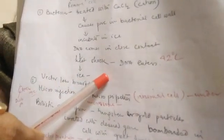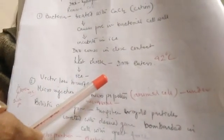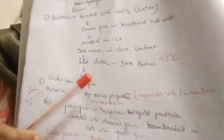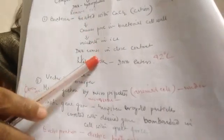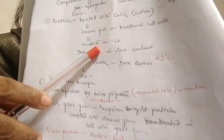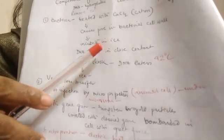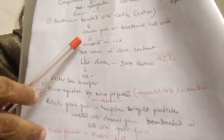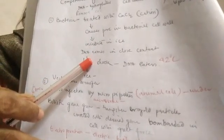So this is how the plasmid can enter the bacterial cell. Now there are other methods. The procedure which we are thinking about is mainly where the vector has been used to insert the target DNA into the cell. But there are certain cases where we don't use vector. We use directly the target DNA into the cell.